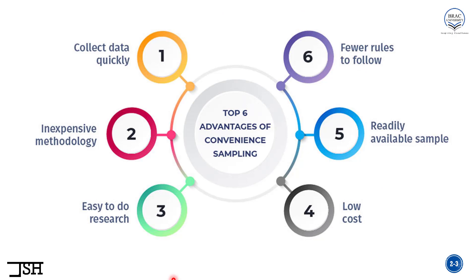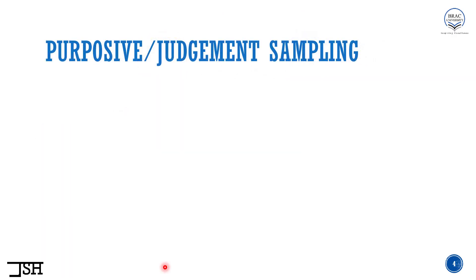Without further delay, let's move on to the next sampling method, which is purposive or judgment sampling. Again, the meaning is hidden in the name. Let's start with the word judgment first — it is called judgment sampling. So in this sampling, we use some sort of judgment. What is that judgment? Let's take a look at the definition.